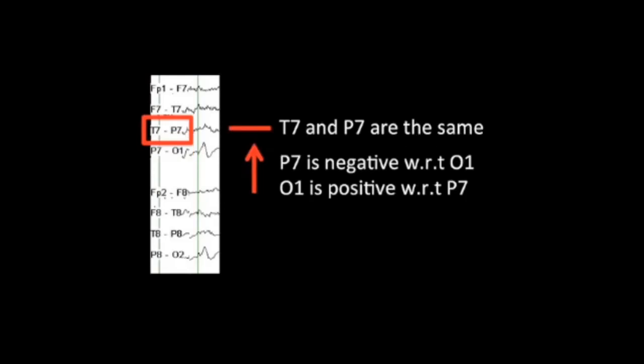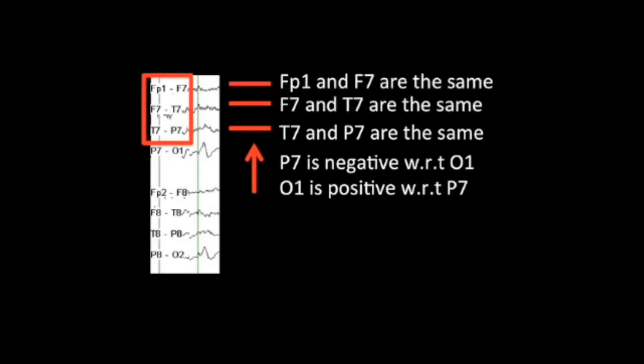We can see that actually, at T7P7, the line is relatively flat or isoelectric. By EEG convention, this suggests that T7 and P7 are the same. Further up, we see that all the other channels are flat as well, suggesting that all of these electrodes have similar or the same waveform. Therefore, the electrode that seems to have different activity is O1, and this suggests that we have a positivity at O1, or in the occipital region.